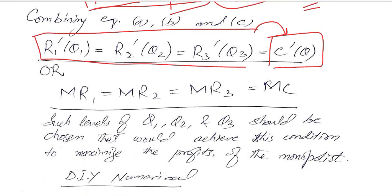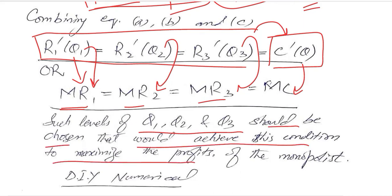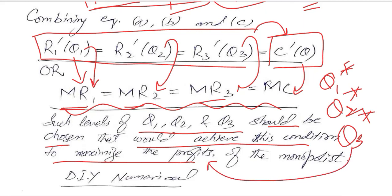And you know that derivative with respect to Q of revenue makes marginal revenue. Since it is due to Q1 it becomes MR1, and it becomes MR2 and this becomes MR3. So this is marginal cost MC. Such levels of Q1 and Q2 and Q3 should be chosen that would achieve this condition to maximize the profits. So the critical values would be Q1, Q2 and Q3. So we have to choose such values that would equate these four values, and that will guarantee that the profit is maximized of the monopolist.